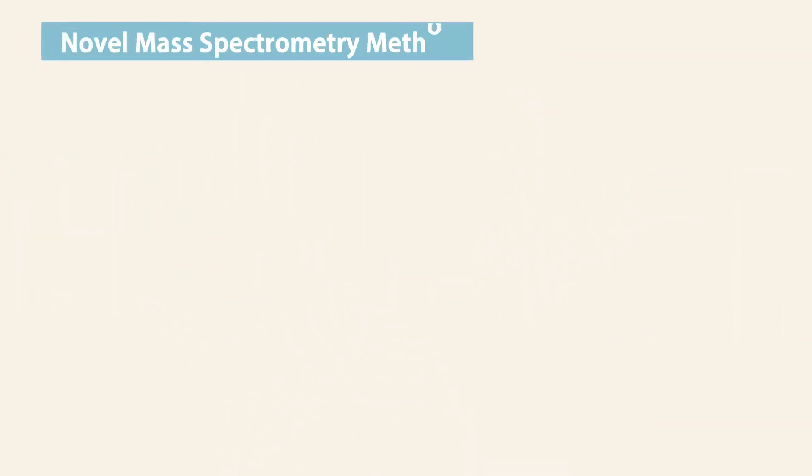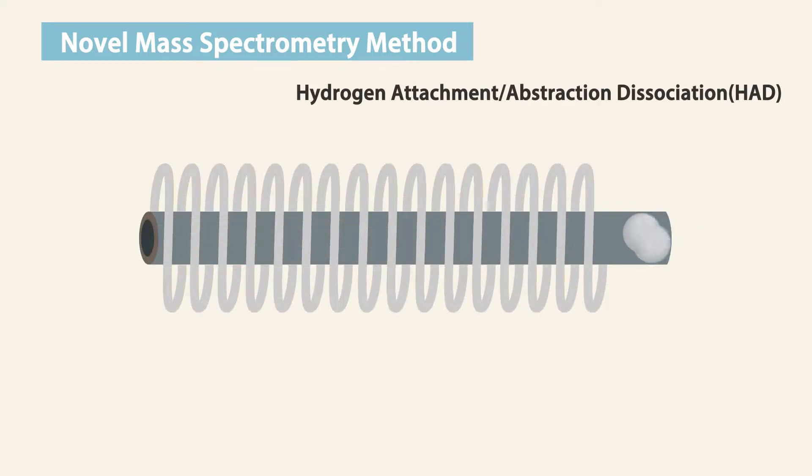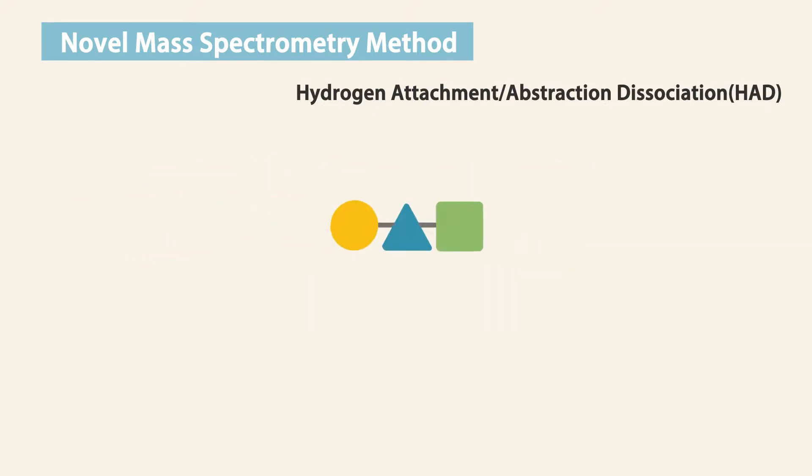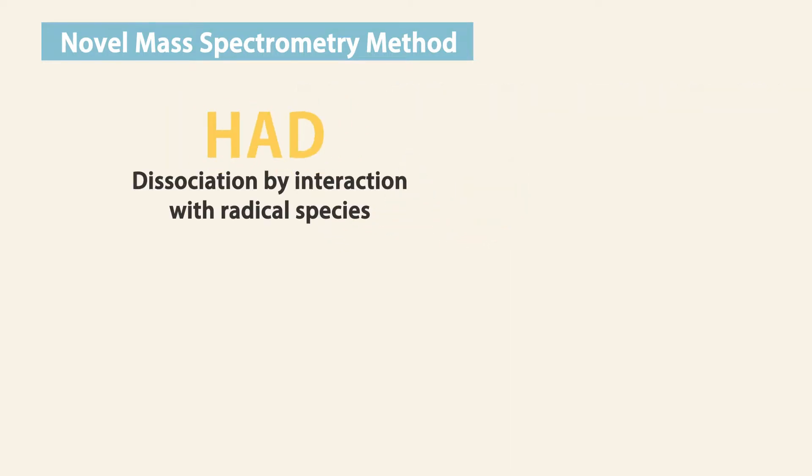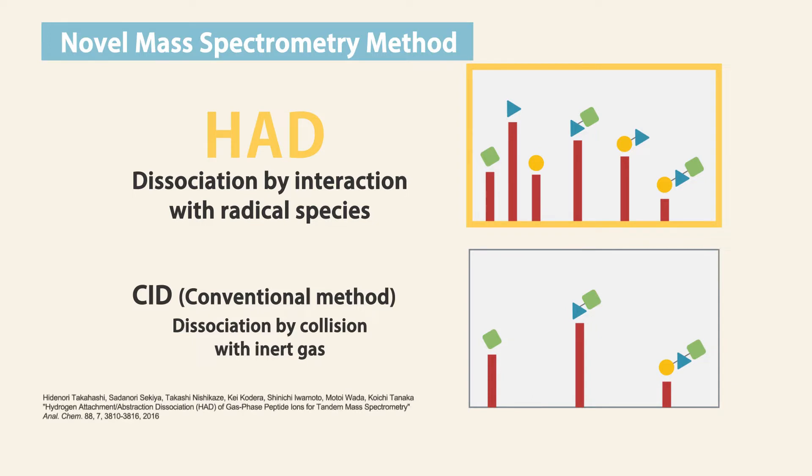Novel mass spectrometry methods: We have developed the radical induced dissociation methods, HAD and OAD, which use interaction with highly reactive radical species to dissociate analytes. We have found that these methods provide complementary structural information to the conventional CID method.